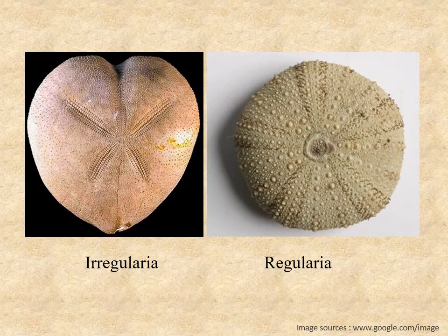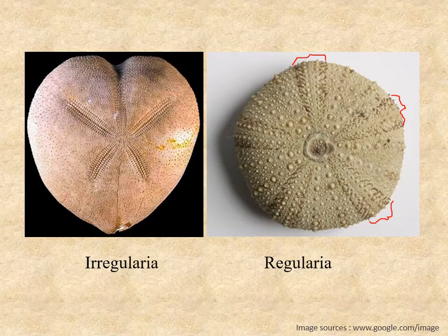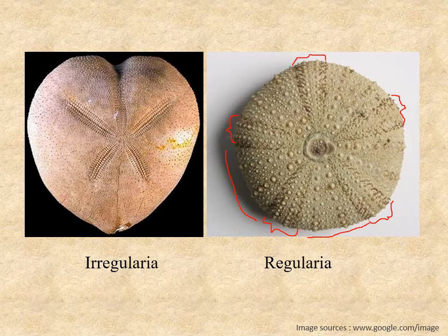The echinoid test mostly has pentameral symmetry — five-fold symmetry — meaning all the amps and inter-amps are of equal size and shape. The shape and size of each amp is exactly similar to the others, and similarly the inter-amps are also similar in size and shape. These echinoids generally have a circular outline — circular ambitus — and are known as Regularia.